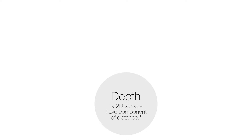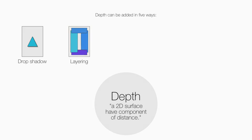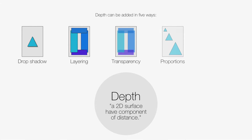The design principle of depth is about making a 2D surface such as paper or a screen have a component of distance. Depth can be added in five different ways: applying a drop shadow to an element, layering different elements, using transparency with elements, using different proportions of the same element on a layout, or using a photograph or image with foreground and background components.